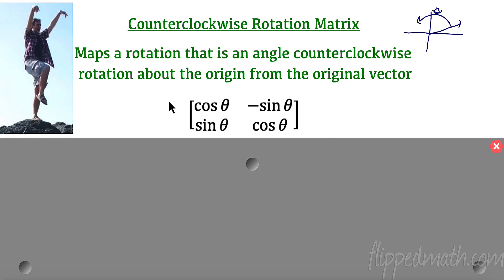And that matrix right here is always going to be true. And all that's going to change is our degree. So it's always going to be cosine theta, negative sine theta, and then sine theta, cosine theta. That's always going to be the case.